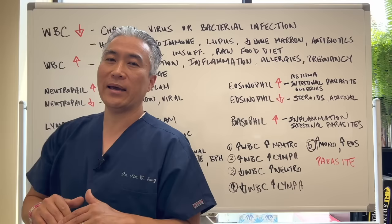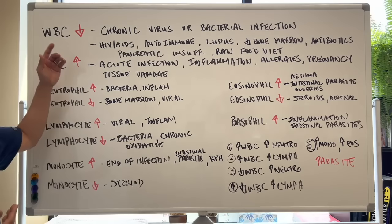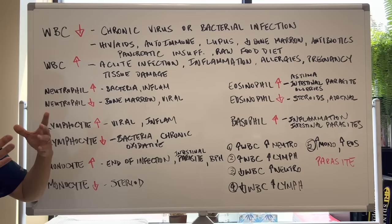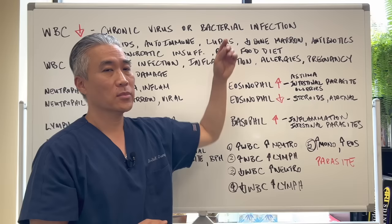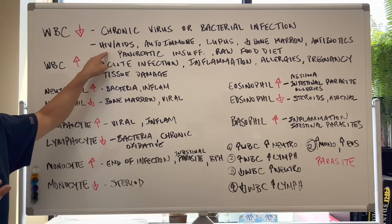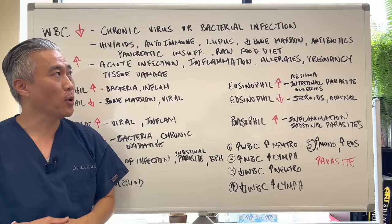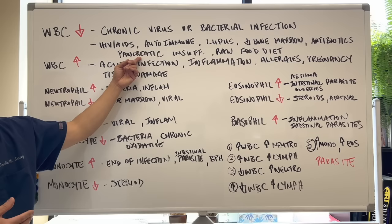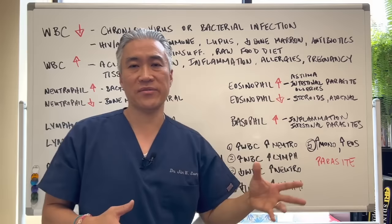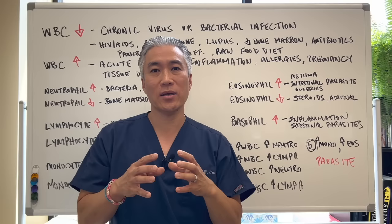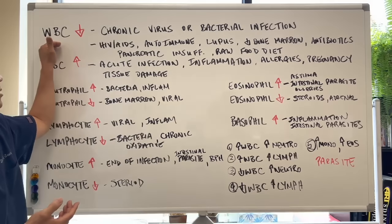When you have a decrease in white blood cell count — your total leukocyte count — it can be related to a chronic virus or chronic bacterial infection. Other reasons it can be decreased include immune suppression like HIV/AIDS, autoimmune disease, lupus, bone marrow suppression, antibiotics, and pancreatic insufficiency. Even a raw food diet could decrease your white blood cell count. With pancreatic insufficiency, white blood cells can take over the phagocytosis process and become depleted.